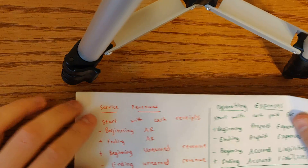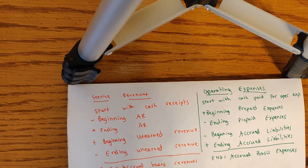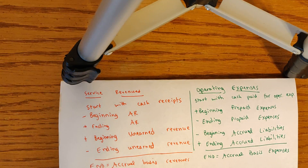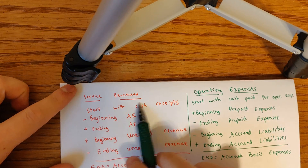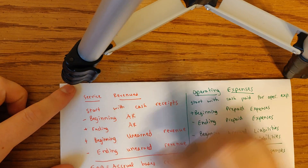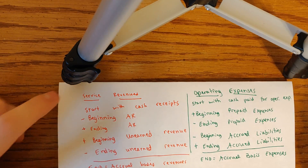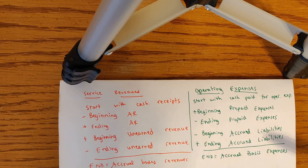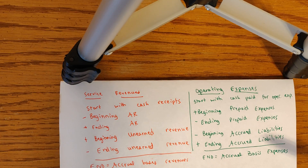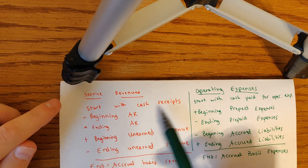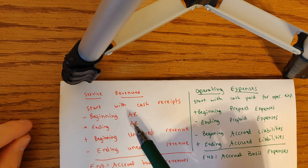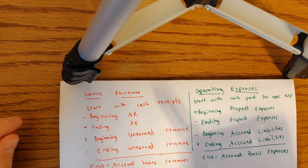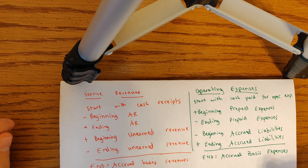Let's walk through the intuition of these different accounts. We'll start on the revenue side — it says service revenue in the book, but it really could be any type of revenue. We start with cash receipts, and then we subtract beginning accounts receivable.